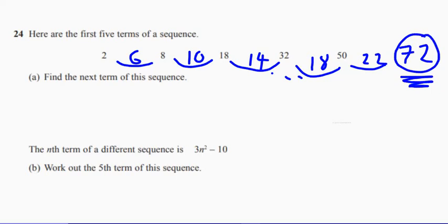Now, on part B, the nth term of a different sequence is 3n squared minus 10. Work out the fifth term of the sequence.